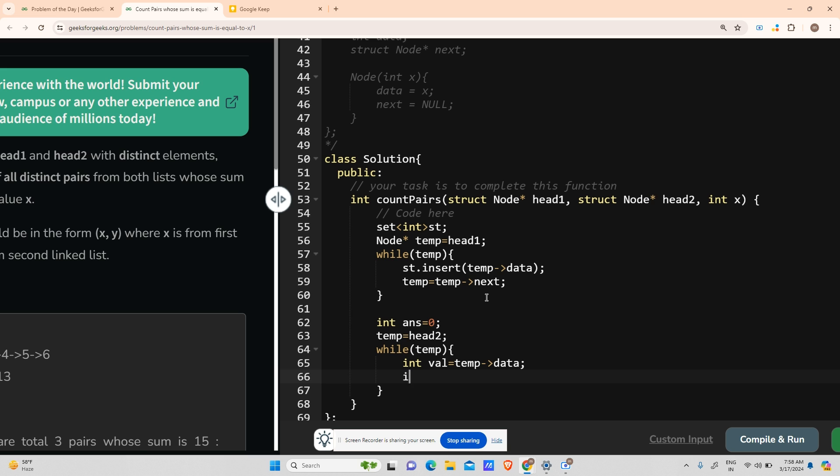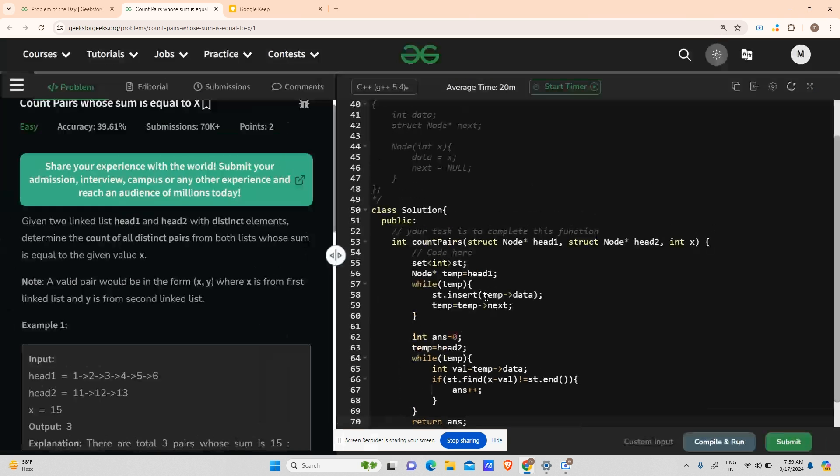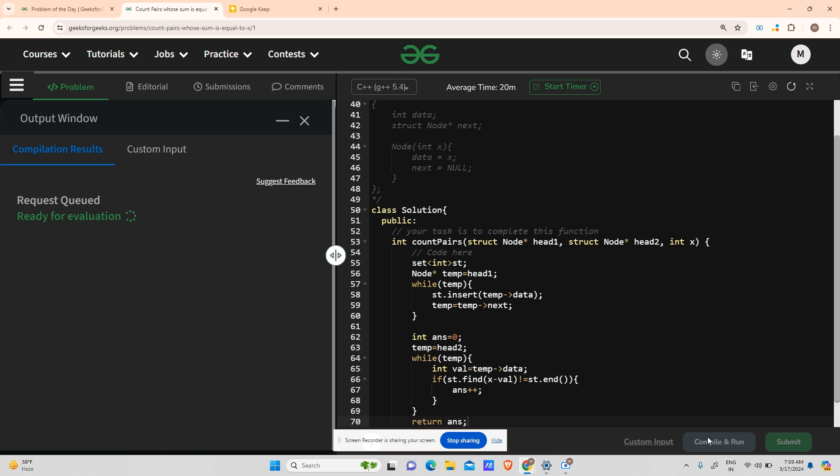Now if st.find(x minus val), if it is not equal to st.end, that is the element is present in the linked list, then answer plus plus. And then return your answer. Hope this will work, let's see. Compile on it.